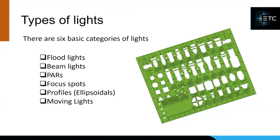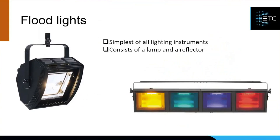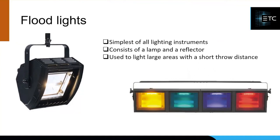Starting with the simplest kind of lights, let's have a look at floodlights. They are the simplest of all lighting instruments — they just consist of a lamp and a reflector within a housing, and they are designed to light a large area with a really short throw distance. They sort of flood the stage with light. Most floodlights we use in theatre tend to be used for cyclorama lighting or backlight lighting. Electric lighting in theatres started as overhead battens, which were basically floodlights, and they've now been mainly allocated to cyclorama or backlight lighting.